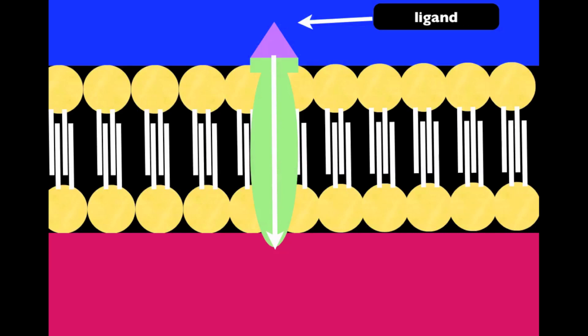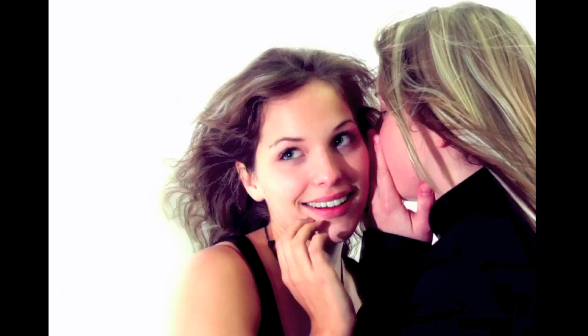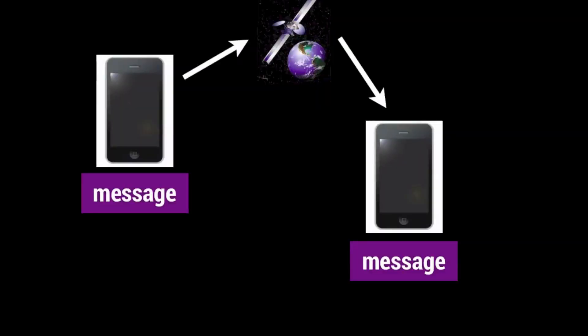So we said that there are two ways that cells help with messaging. The first is the intracellular receptor. That is where the ligand moves into the cell to give the message directly, similar to when someone tells you a piece of gossip. On the other hand, the membrane receptor is when the ligand attaches to the membrane to send the message in the same way that you would send a text message, and that is a brief introduction to how the cell membrane works.